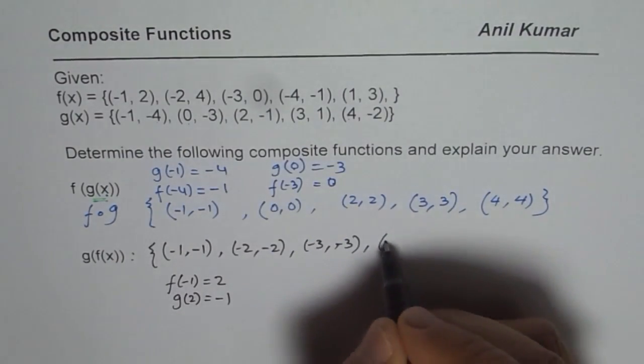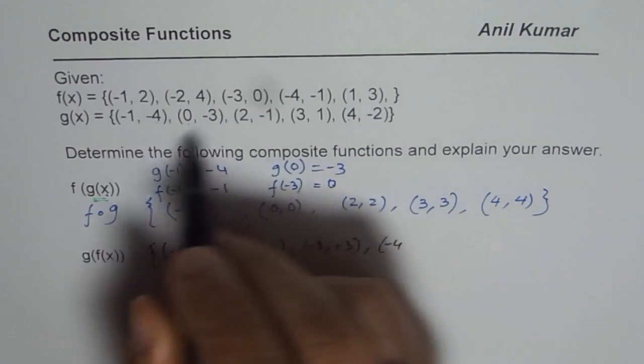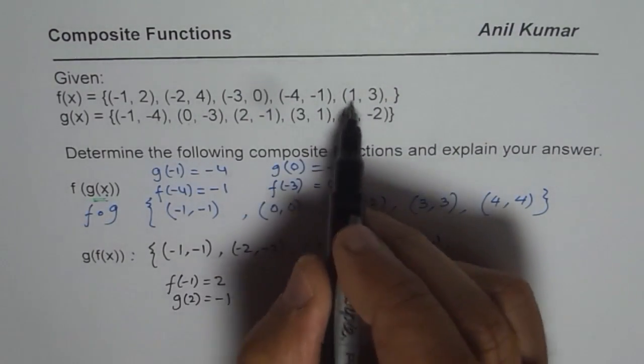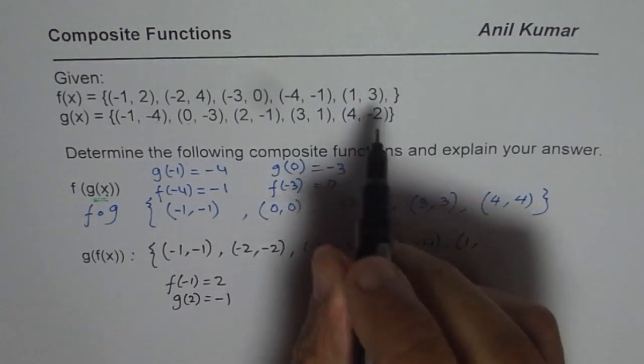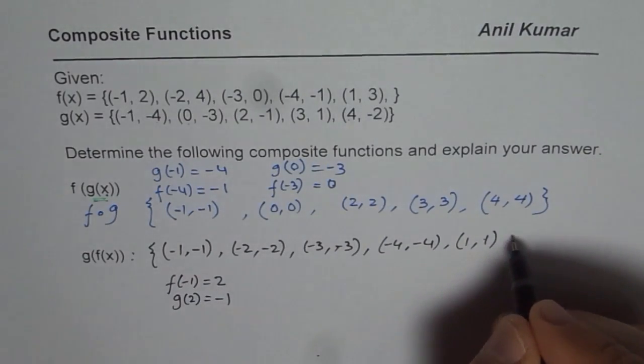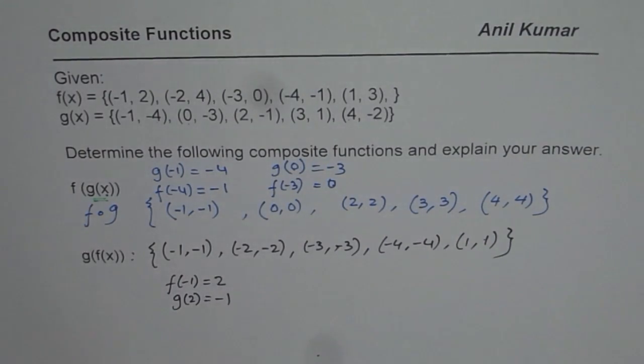f of minus 4 is minus 1. g of minus 1 is minus 4. Interesting. Then 1 is the input. f of 1 is 3 and g of 3 is 1. So that is what we get as an output.